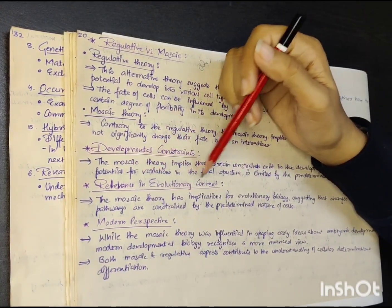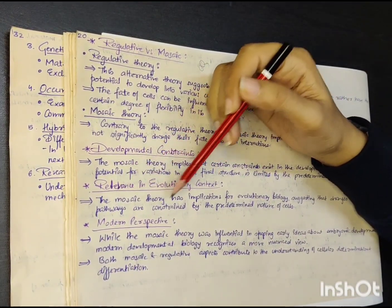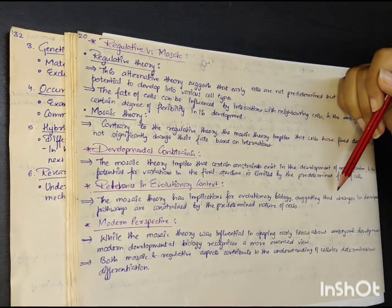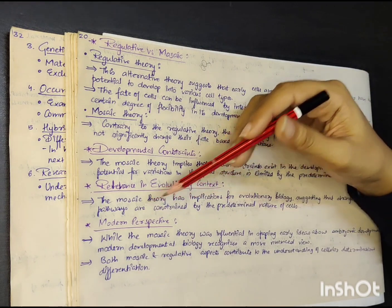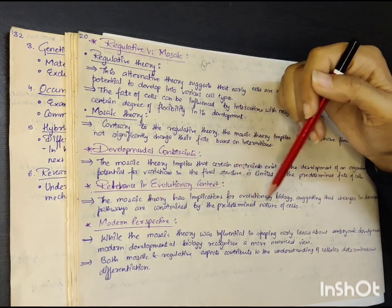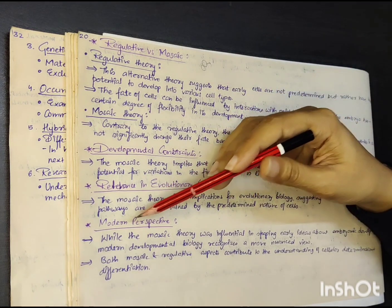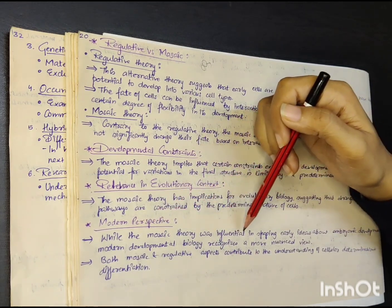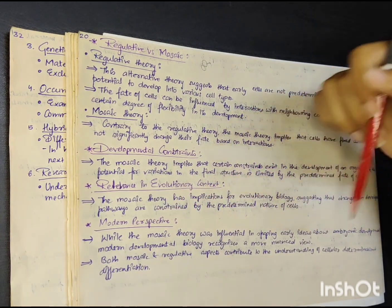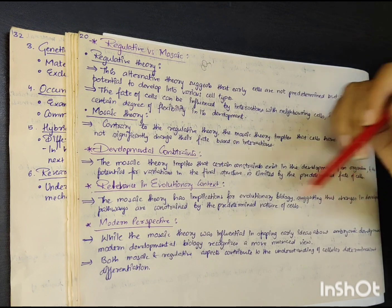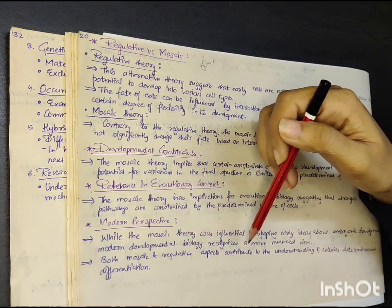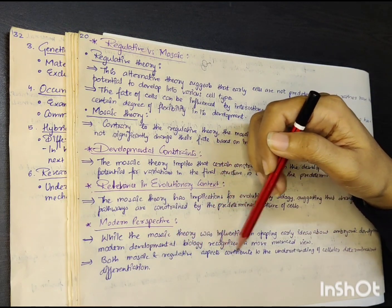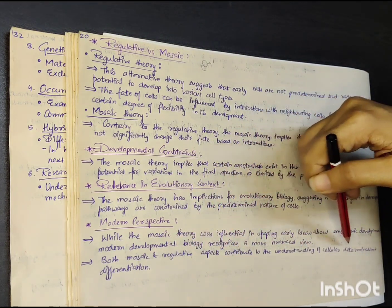The mosaic theory has implications for evolutionary biology, suggesting that changes in developmental pathways are constrained by the predetermined nature of cells. While the mosaic theory was influential in shaping earlier ideas about embryonic development, modern developmental biology recognizes a more nuanced view. Both mosaic and regulative aspects contribute to the understanding of cellular determination and differentiation.